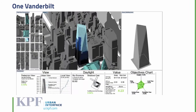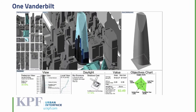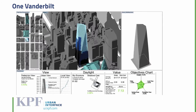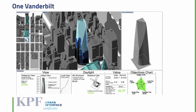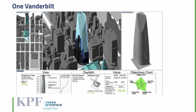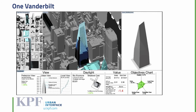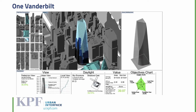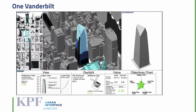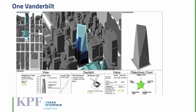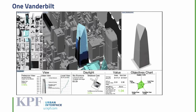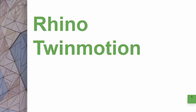Another example is KPF. What they use Grasshopper for is making very quick iterations, and Grasshopper comes back with information like what are the views, what are the daylight loads, what's the value per square footage, what's the revenue that can be based on that. All of those things can be evaluated at design time to explore different options.